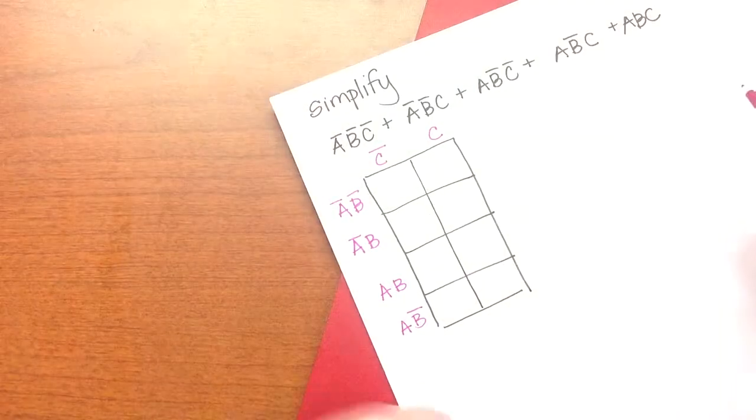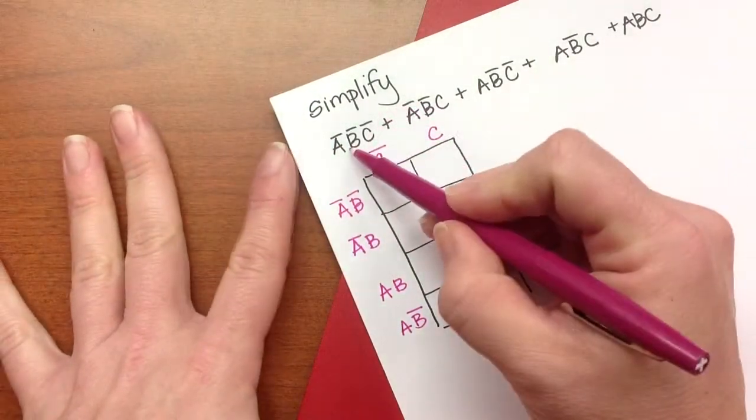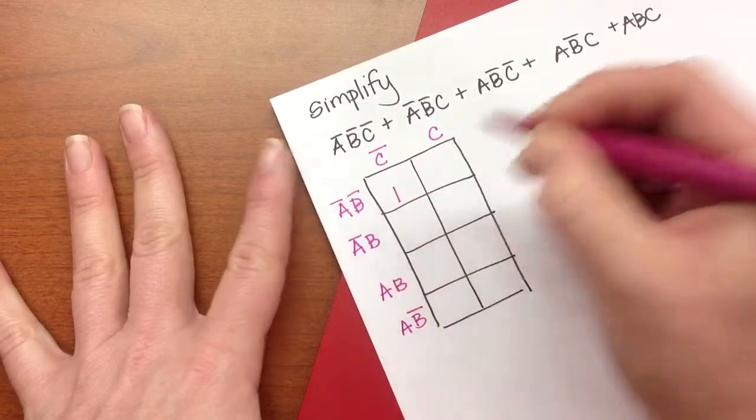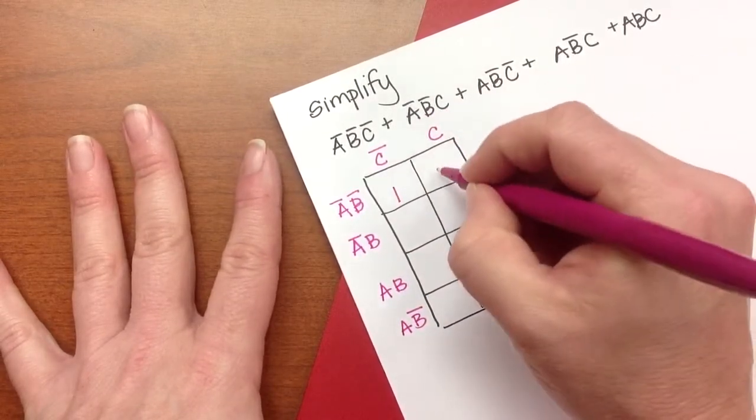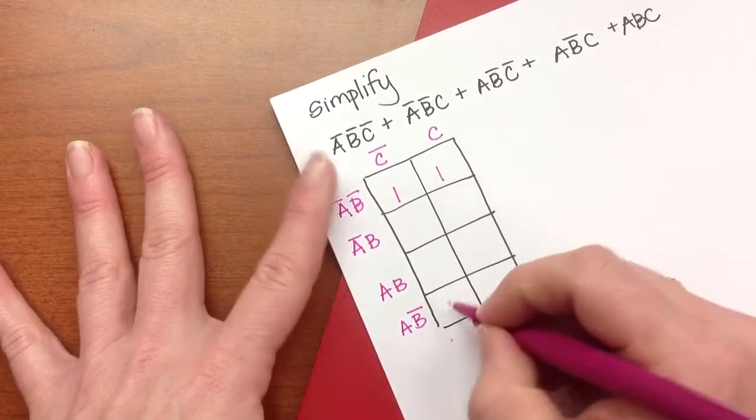Now I'll go everywhere I have a term and put a 1. So I have not A, not B, not C goes here. Not A, not B, C here. A, not B, not C here.